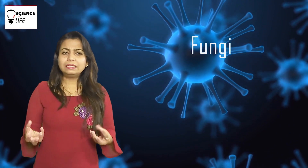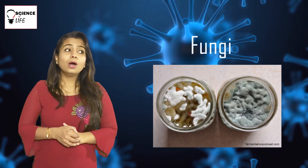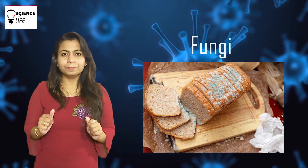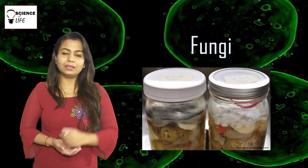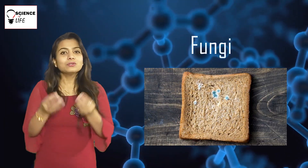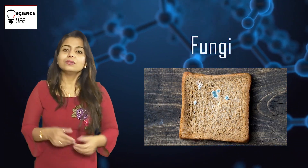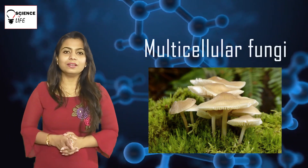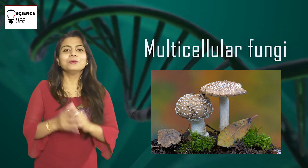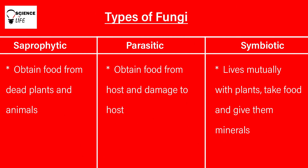Coming to the fourth category — fungi. You must have observed some white foam-like structure on pickles, or if your bread is spoiled and 10 days old, you must have seen black patches on it. That is fungi — it is actually a colony of fungi. Fungi are normally unicellular but multicellular as well: unicellular are yeast and multicellular are mushrooms — mushrooms are fungi. There are different categories of fungi: they are saprophytes, parasitic, and symbiotic.